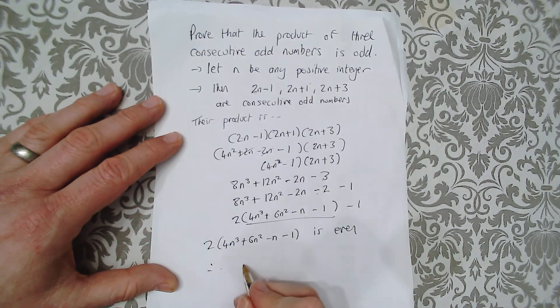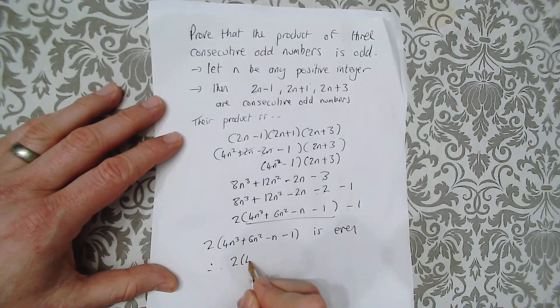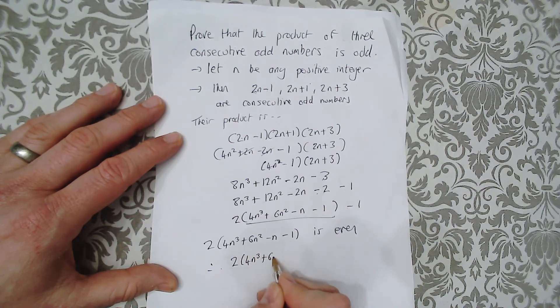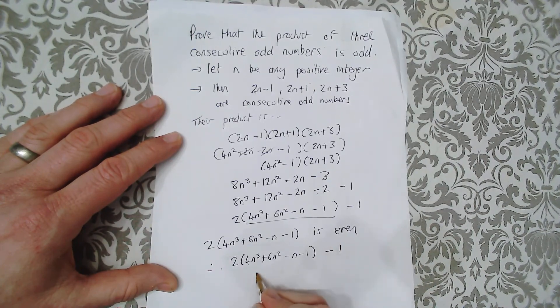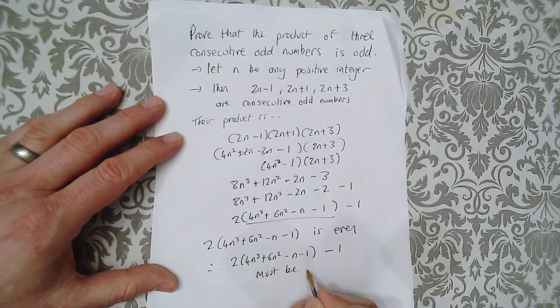Therefore, 2 lots of 4n cubed plus 6n squared minus n minus 1, take away 1, must be odd.